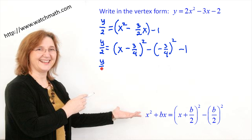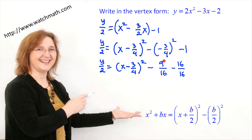Let's simplify: y/2 equals x minus 3/4 squared, minus 9/16, minus 1. And 1 is equal to 16/16. We can combine these two fractions into negative 25/16. So y/2 equals x minus 3/4 squared minus 25/16.